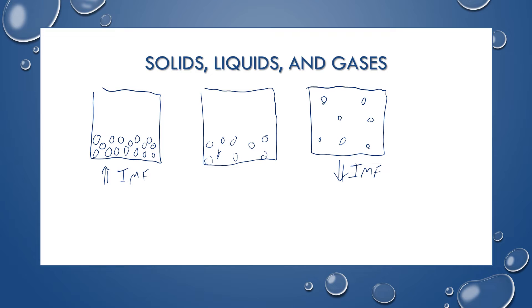And then, solids and liquids are very difficult to compress. There's already very little space between the particles, so they're not compressible. Gases, since they have lots of space between them, are compressible. We also say that liquids and gases flow, because they do have that more flexibility compared to a solid, so liquids and gases can flow.